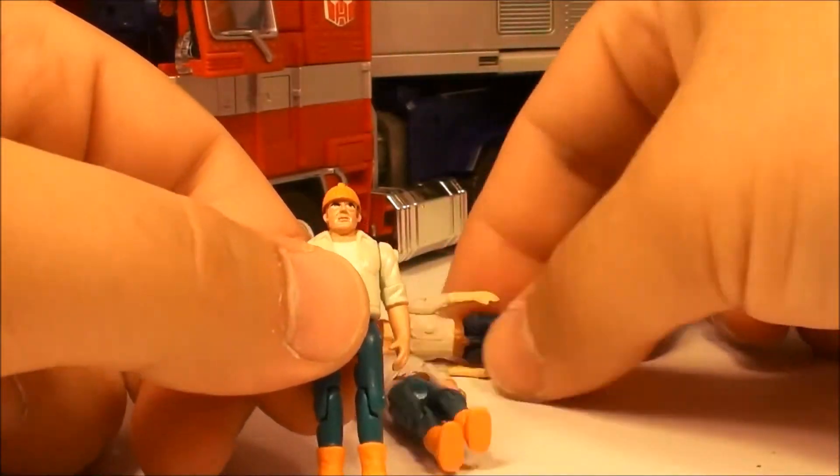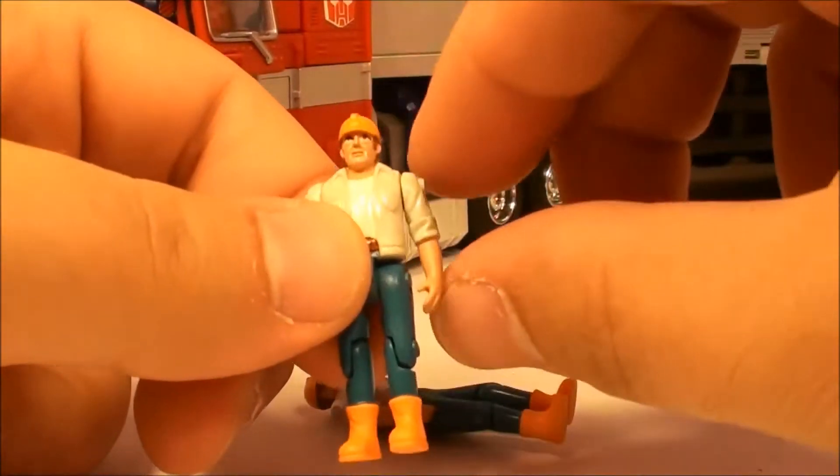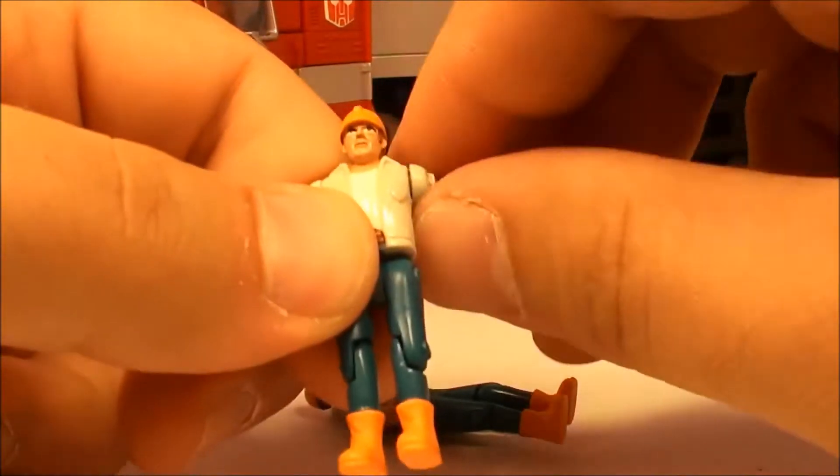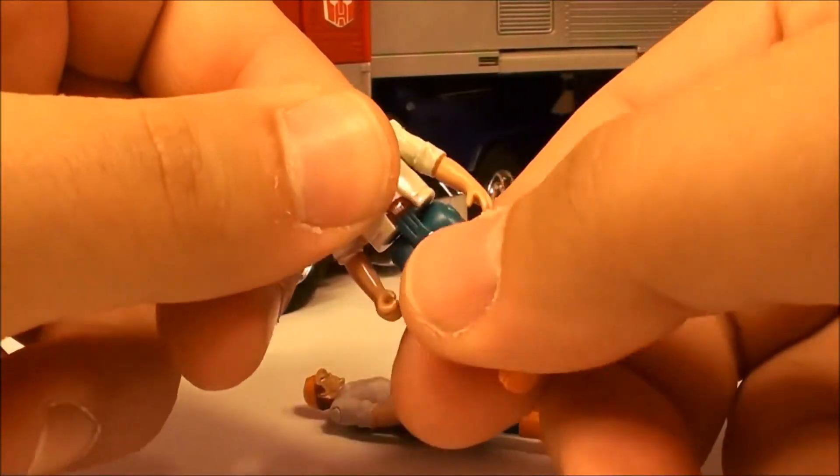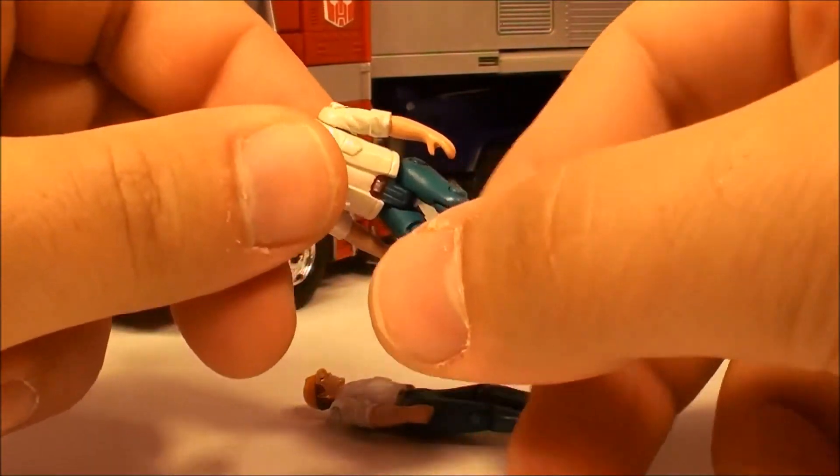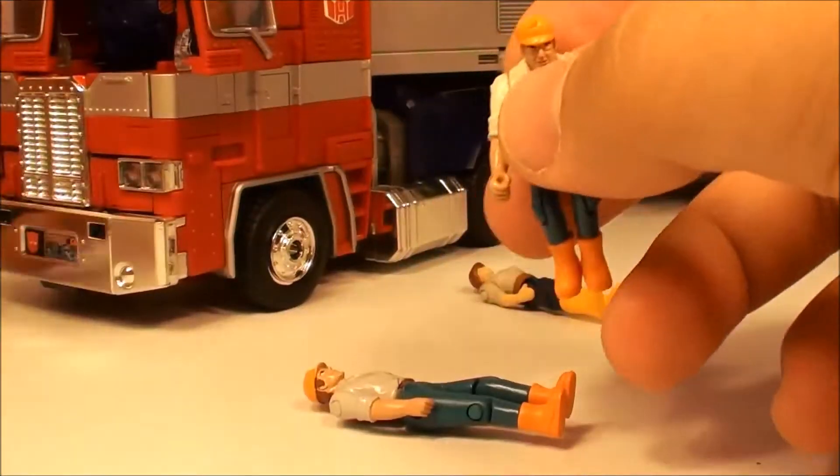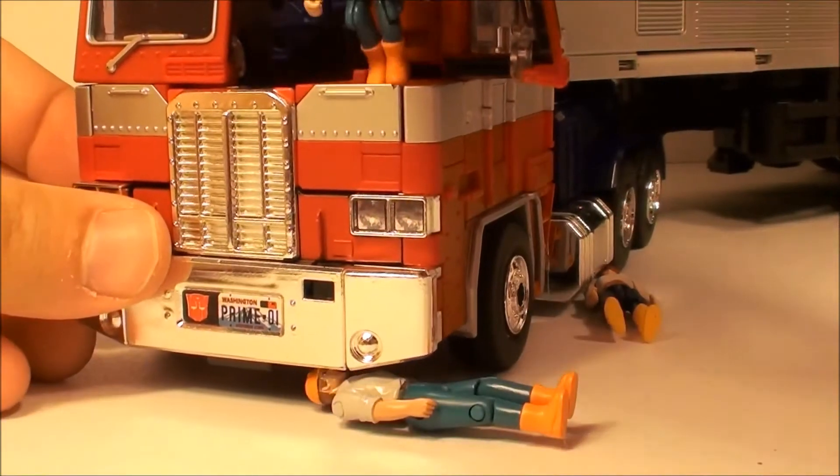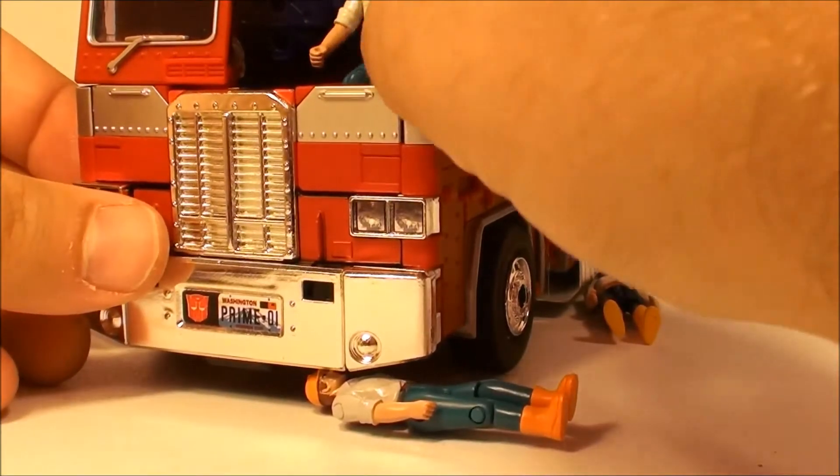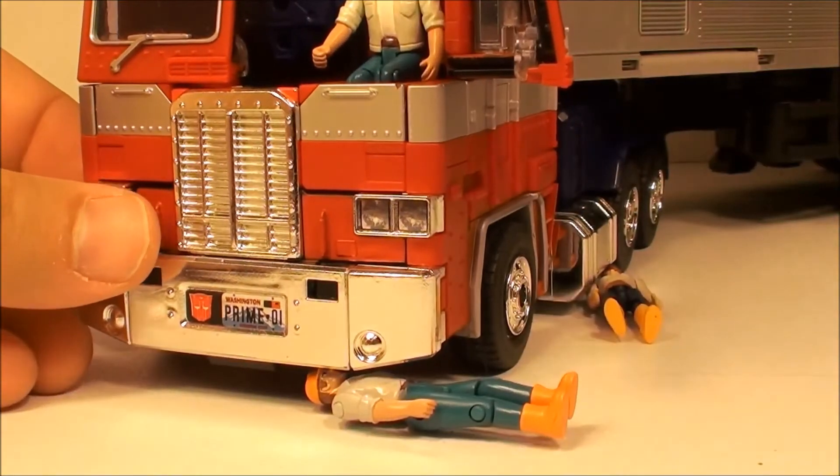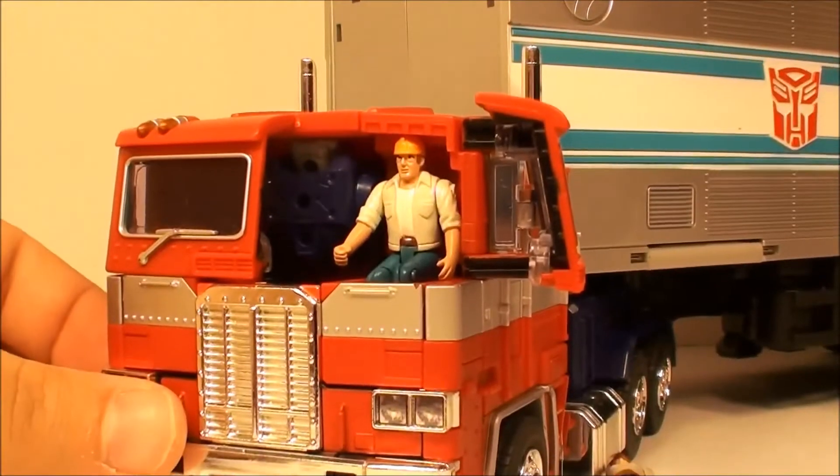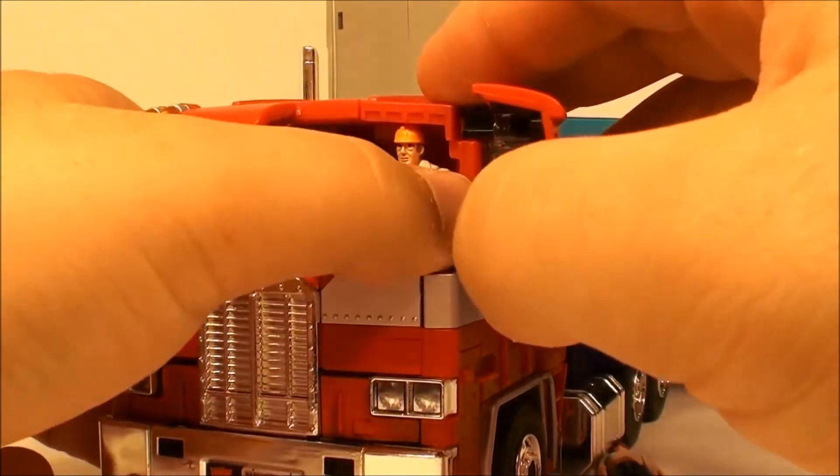The articulation on this guy is pretty much the same as the MP10 figure. You've got the shoulder, you've got the jointed legs, and then the jointed knee so they can sit within Optimus Prime. And that's what we're gonna do, we're gonna take them and we'll fit them right in. Now the fit is definitely a little bit tighter for Sparkplug.